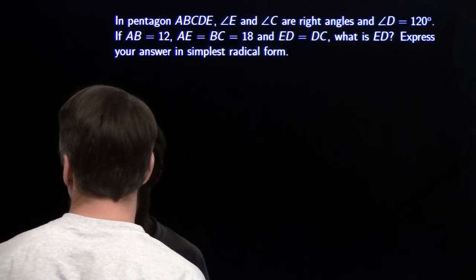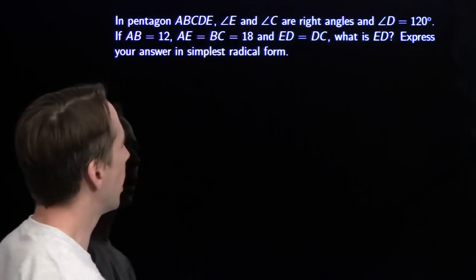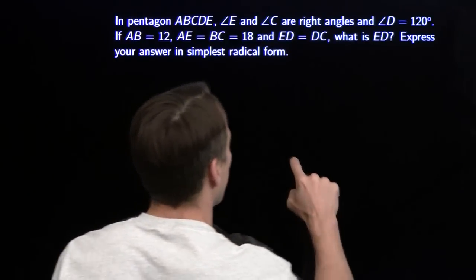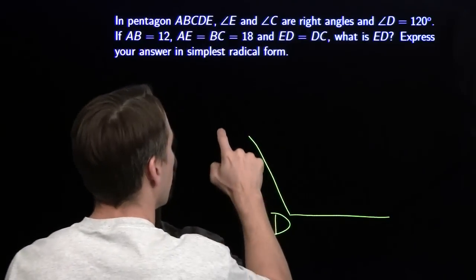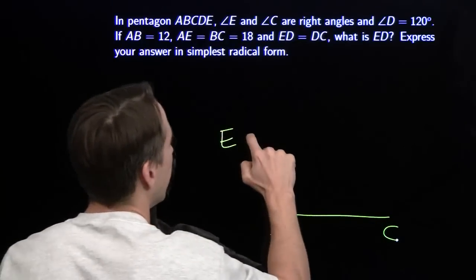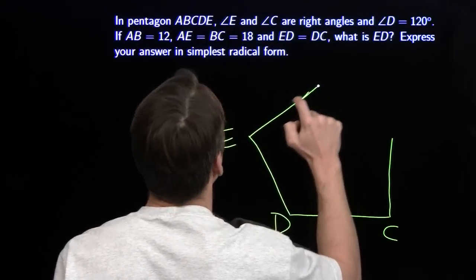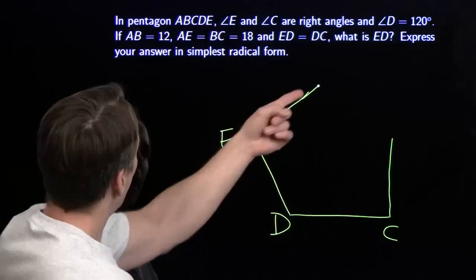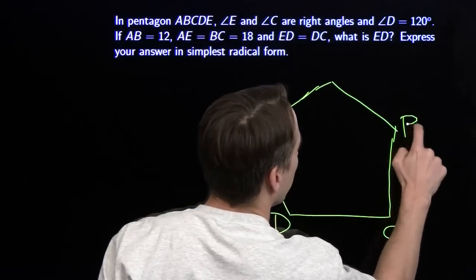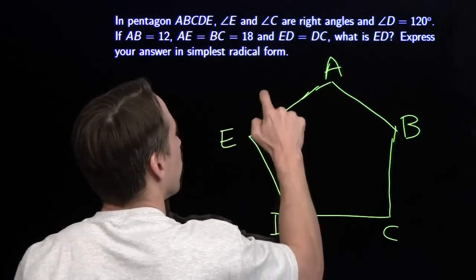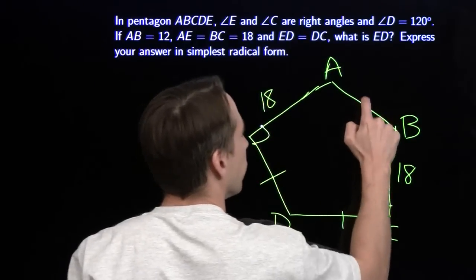Pentagon A, B, C, D, E. E and C are right angles. D is 120 degrees. I've got to draw this picture. There's angle D. E and C are right angles, so I go out from here to a right angle, and up from here to a right angle. AE and BC have the same length, so we'll stop at about the same length and connect these two. This is B, this is A. These are each 18, these two are equal. Right angle, right angle. This is 12.